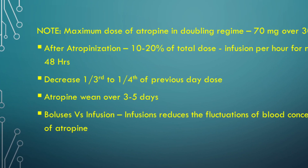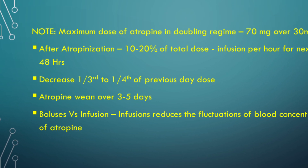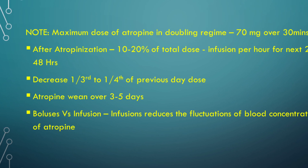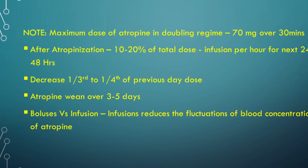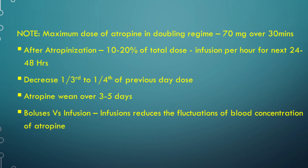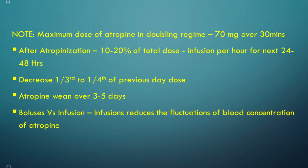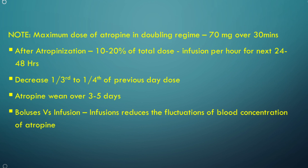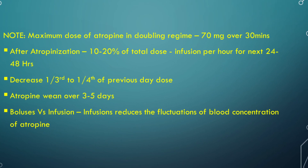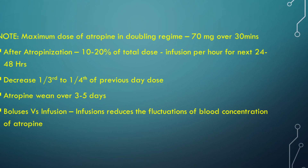Once atropinization is complete, 10–20% of the total loading dose should be infused every hour for 24–48 hours. Then decrease by one-third to one-fourth of the previous day's dose. Likewise, atropine should be weaned over 3–5 days. Recent evidence suggests that infusion of atropine reduces the fluctuations in blood concentration and thus reduces the need for frequent monitoring of the patient.